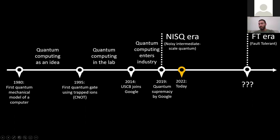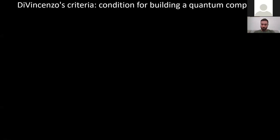Many roadmaps from Google, IBM, and IonQ project that fault-tolerant quantum computing will be achieved by the end of this decade, around 2030. Right now we can discuss what is needed to build a quantum computer, guided by the DiVincenzo criteria.